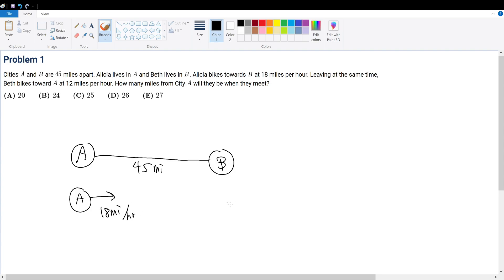Leaving at the same time, Beth bikes towards A at 12 miles per hour. The question asks: how many miles from city A will they be when they meet? We're trying to find their meeting point.